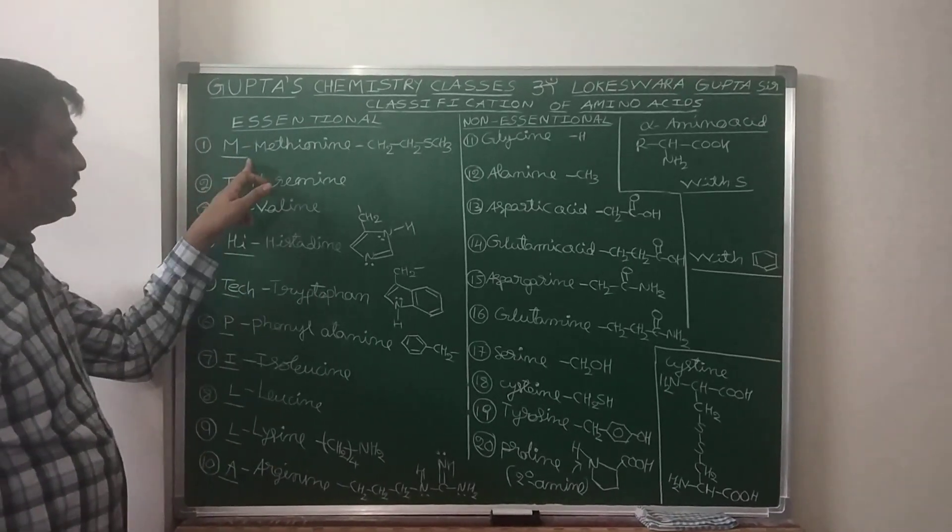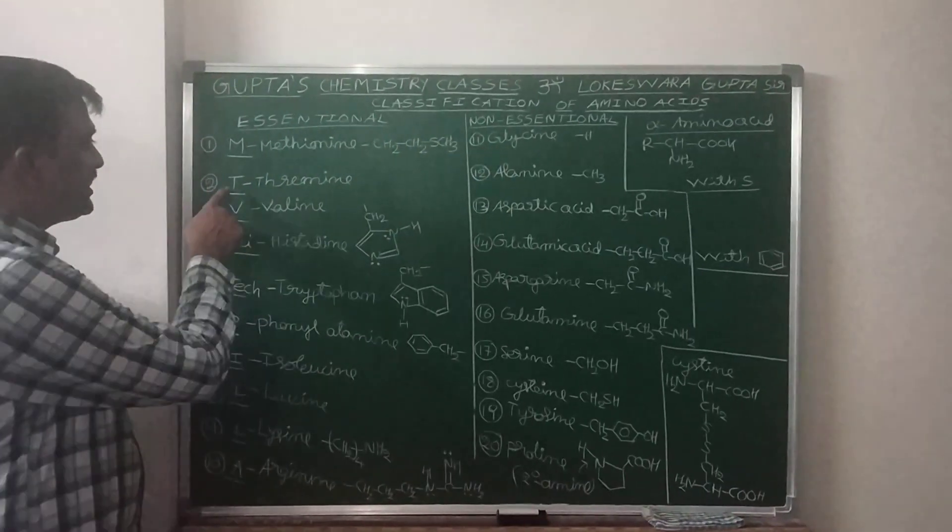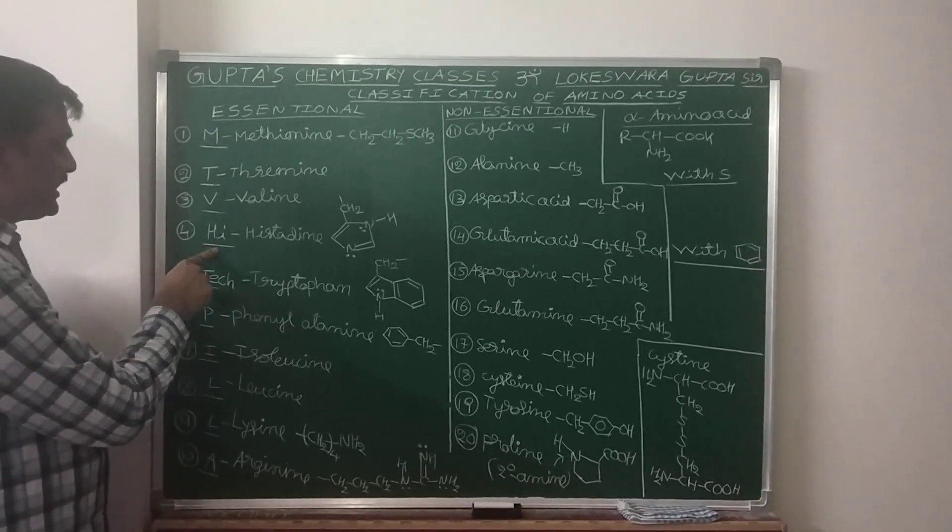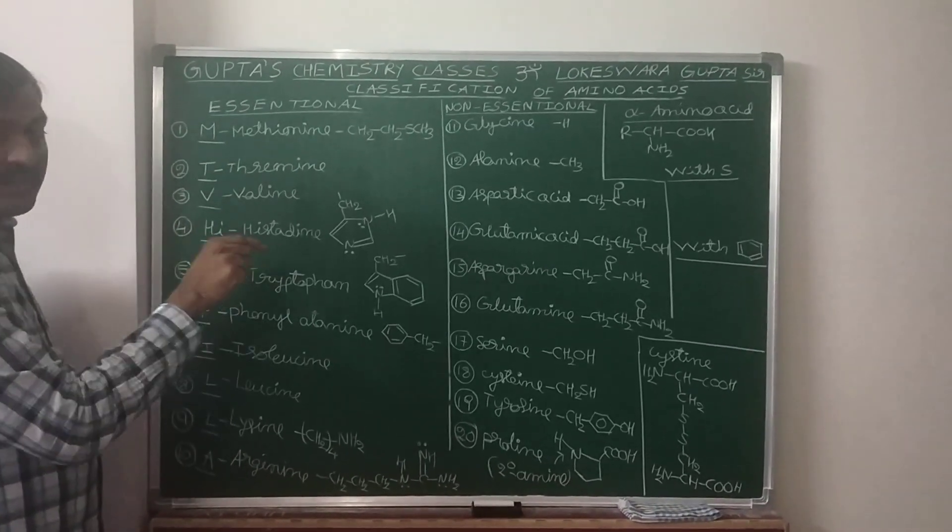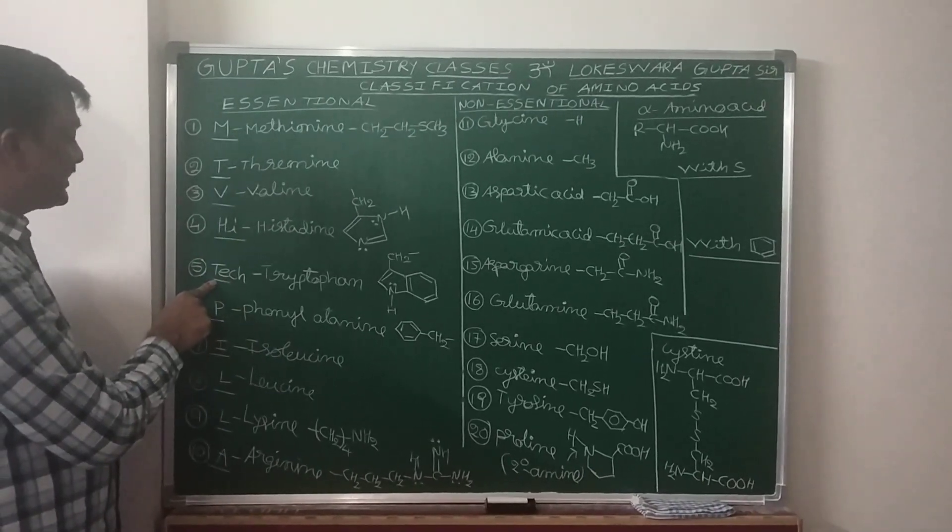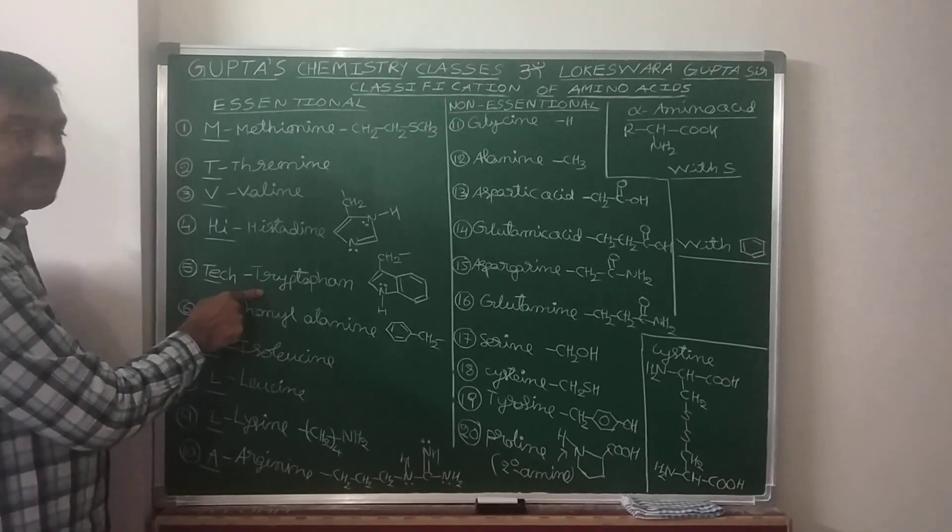M - Methionine, it is the alkyl group. T - Threonine. V - Valine. H, I - I taken to frame the sentence - Histidine. Tech - in this you take the letter T only, tech I taken to frame the sentence - Tryptophan.